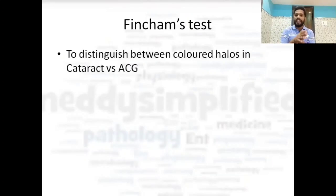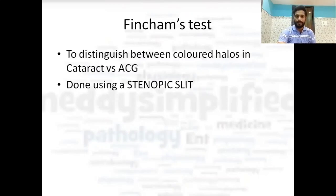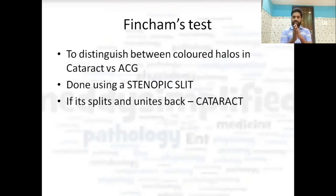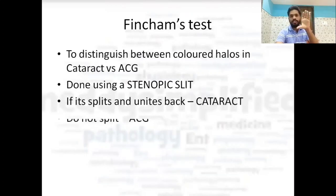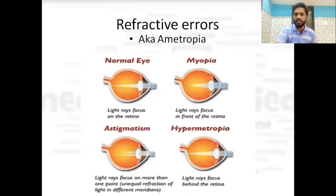Fincham's test is used to differentiate colored halos between cataract and angle closure glaucoma. Using a stenopic slit: if the slit splits and unites back, the colored halos are due to cataract; if it does not split at all, it is angle closure glaucoma. This is how a stenopic slit looks — you can get a question asking what the slit is used for, with Fincham's test as one answer.